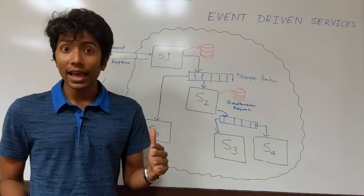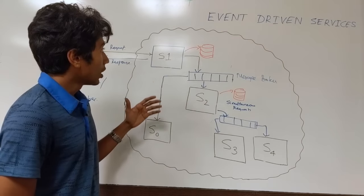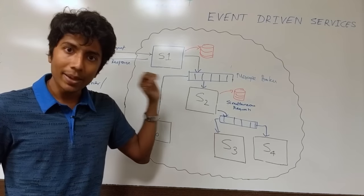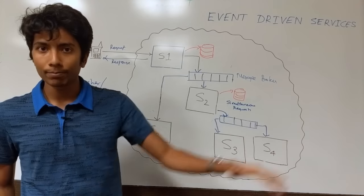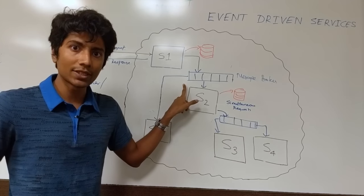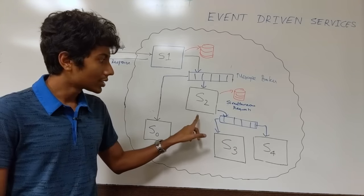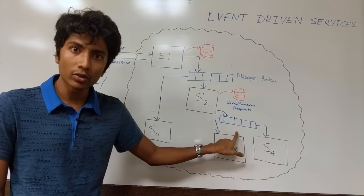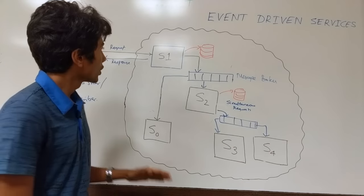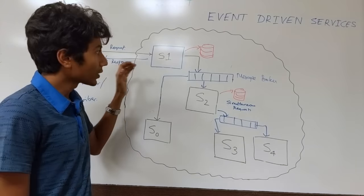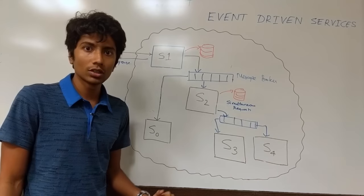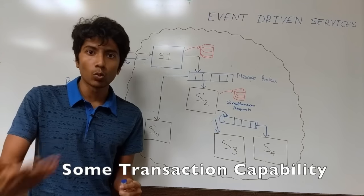This also provides you some sort of transaction guarantees. So if you're sending a message to S1 and it's able to persist to the message broker, that means that the message will somehow reach S3 at some point of time in the future. Because this message broker is not going to lose messages. It has some persistence in it. It's going to ensure that S2 gets the message. Similarly, this message broker is not going to lose its messages, so S3 and S4 are ensured to get the messages. So if you send this request once and you get a success, it means that this process will terminate at some point of time in the future. So that's a loose transaction guarantee of at least once.